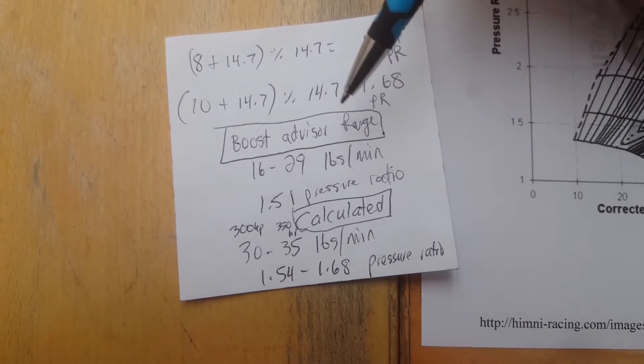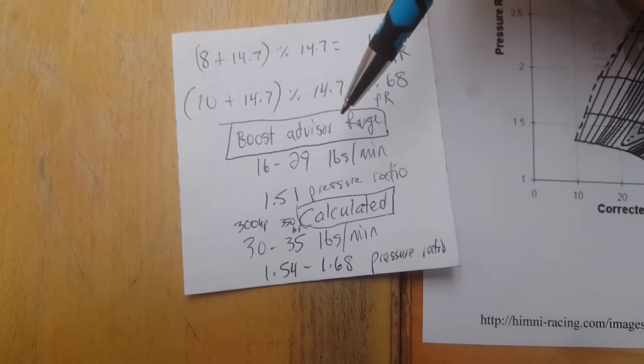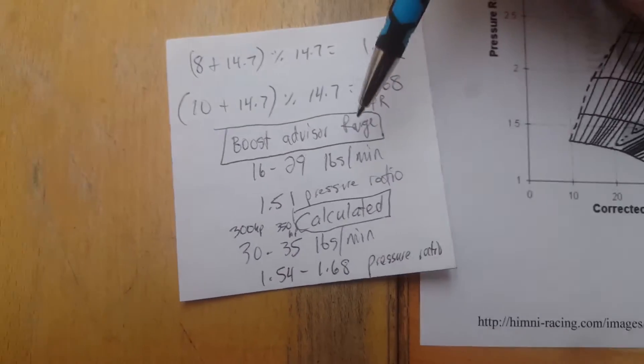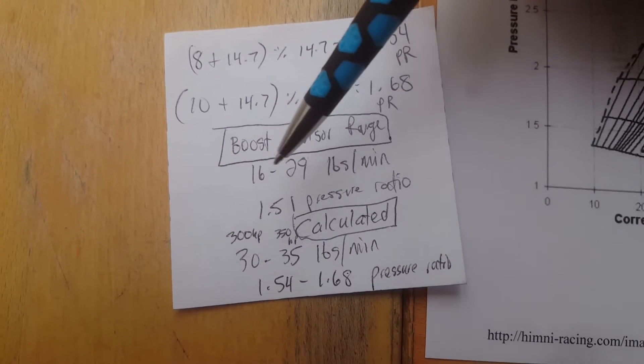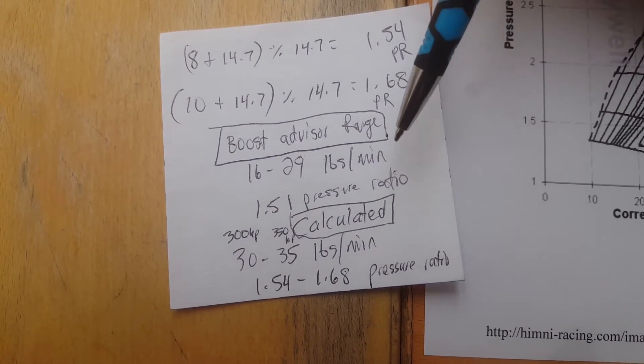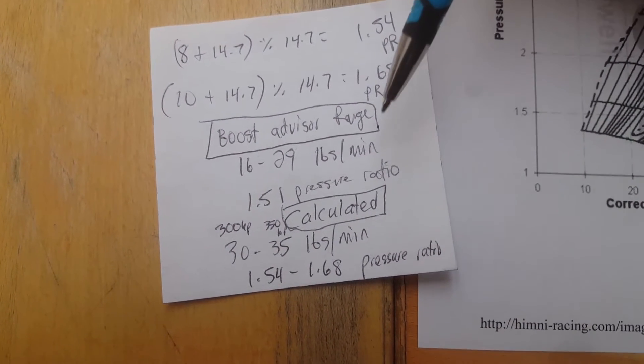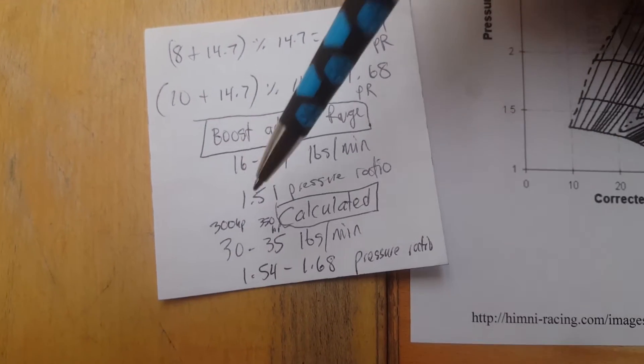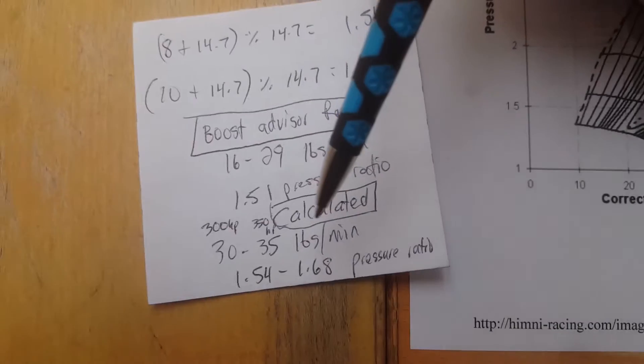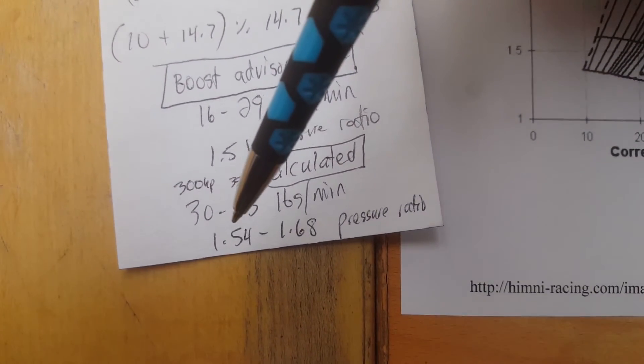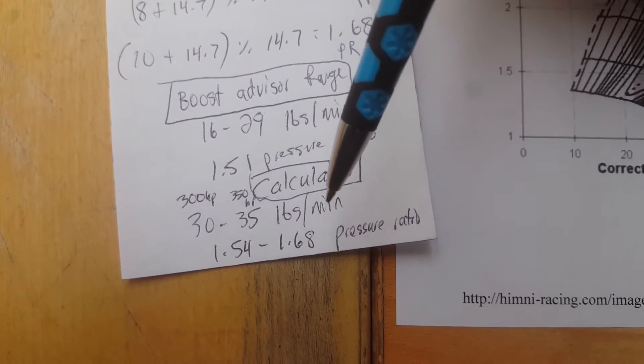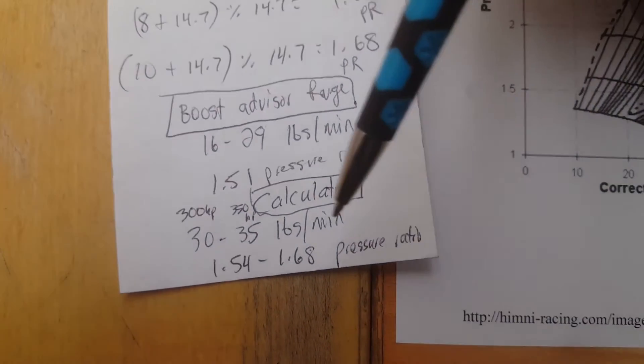The Boost Advisor app has its range that it recommends, basically, from the information you put in, what power you want, what intercooler you're using, what fuel, your altitude, stuff like that. It came up with 16 to 29 pounds a minute for my specific application, a 2.5 liter single turbo, 350 brake horsepower, let's say, or 400, somewhere in that range. And it only gives you one pressure ratio, so 1.51. The calculated one from my math is 1.54 minimum for 300, 1.68 for 350. This is also brake horsepower, so it's most likely going to be closer to 400 to make this in wheel horsepower.